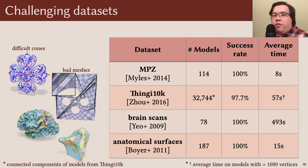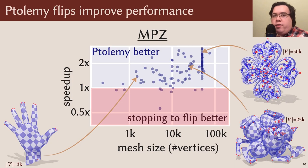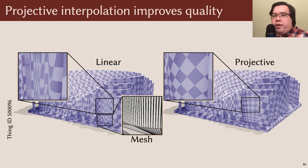The code was generally fast, often finishing a matter of seconds, although it took up to several minutes on a few of the large brain scans, and up to half an hour on some of the most challenging Thingy10k inputs. We found that Ptolemy flips provide a definite performance benefit, often providing a 2x speedup on MPZ, for example.